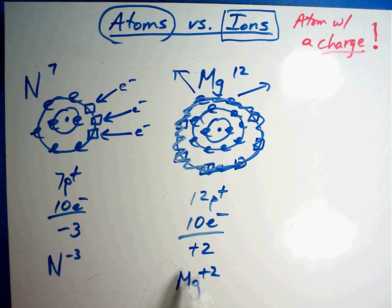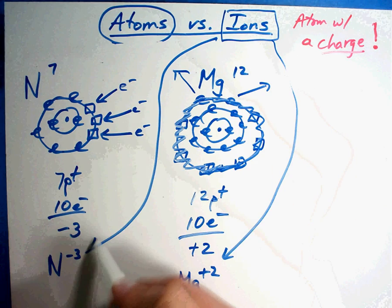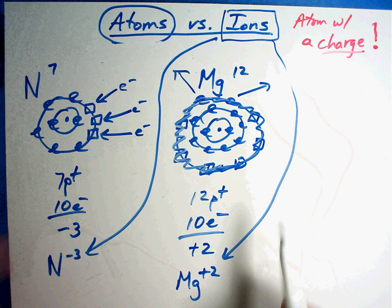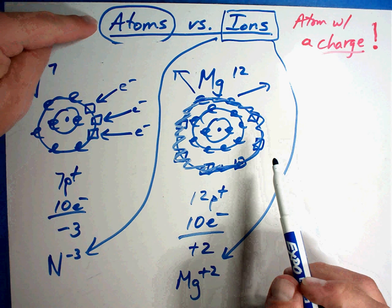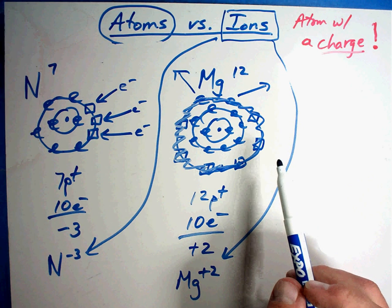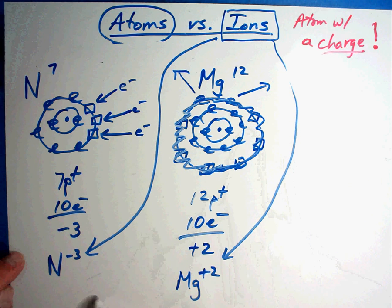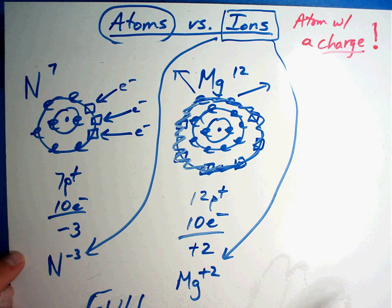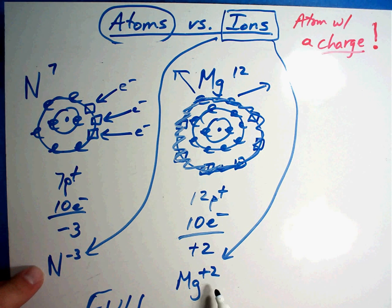These are what are called ions. The only difference between them is this: you draw atoms and ions the same way. Atoms look exactly like they do on the chart - equal number of protons and electrons. When they move their electrons to be full, that is what's called an ion. In the next section, I'm going to give you a couple of atoms and see if you can convert them into ions yourself.